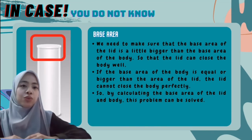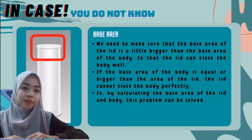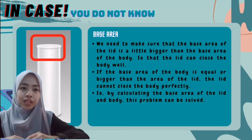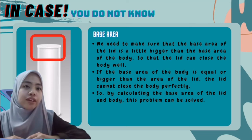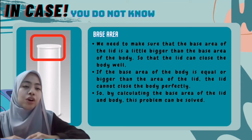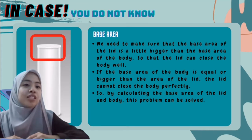In case you are wondering why the base area of the lid should be a little bigger than the base area of the body — the answer is so that the lid can close the body properly. If the area of the body were equal to or bigger than the lid, the lid cannot close the body perfectly. By calculating the base areas of both the lid and body, this problem can be solved.